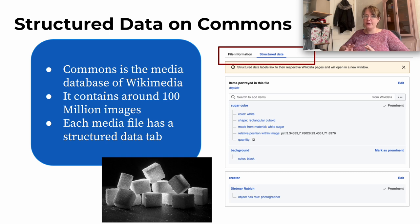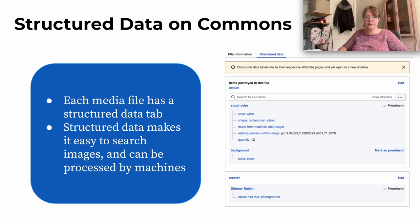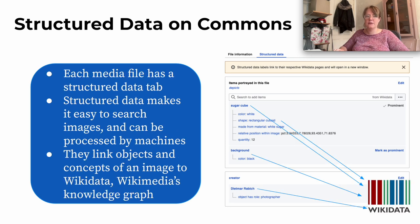Each media file on Wikimedia Commons, including the images, has a structured data tab. Here, for example, you see this picture of sugar cubes, and while there's also file information, there's also a tab that talks about structured data specifically. Structured data is really helpful because it makes it easy to search images and can be easily processed by machines. All objects of an image and all kinds of meta information are directly linked to Wikidata, Wikimedia's knowledge graph, making it very easily processable by machines.